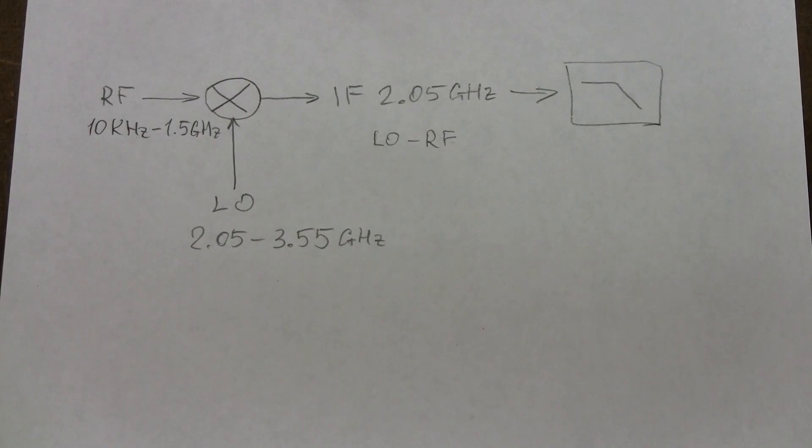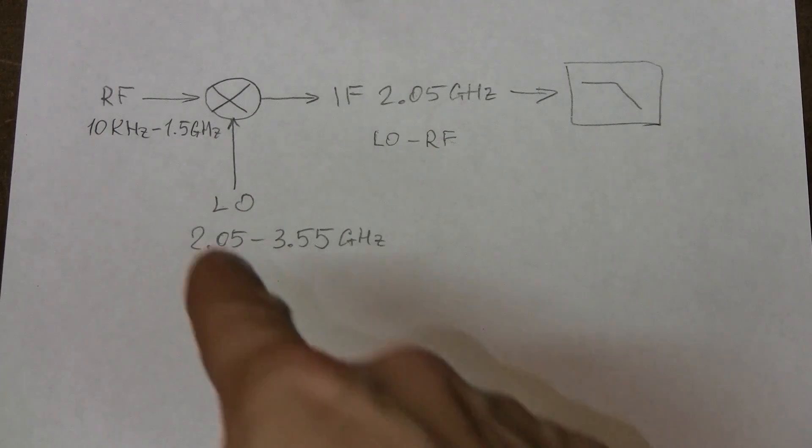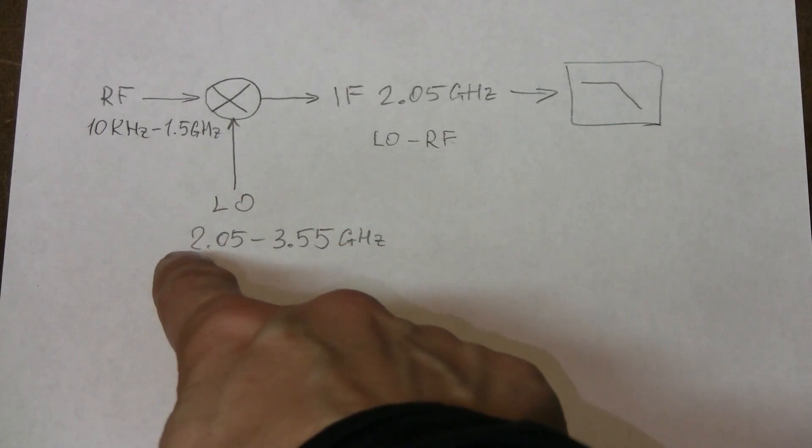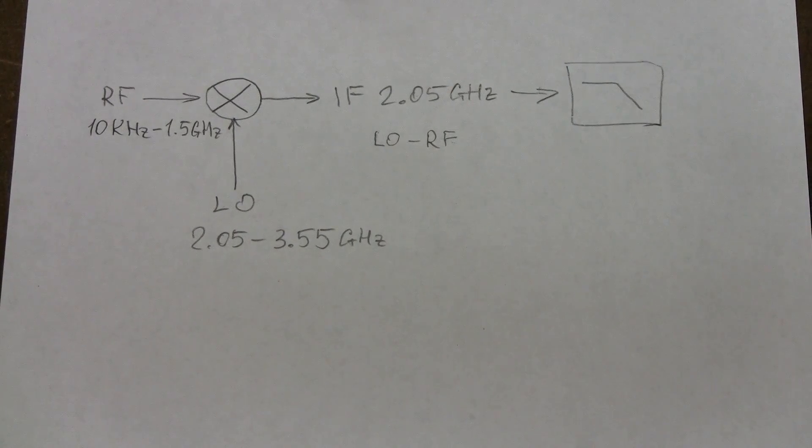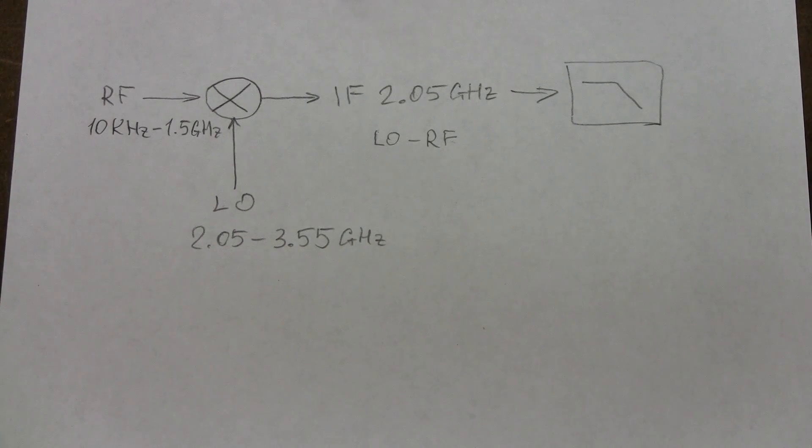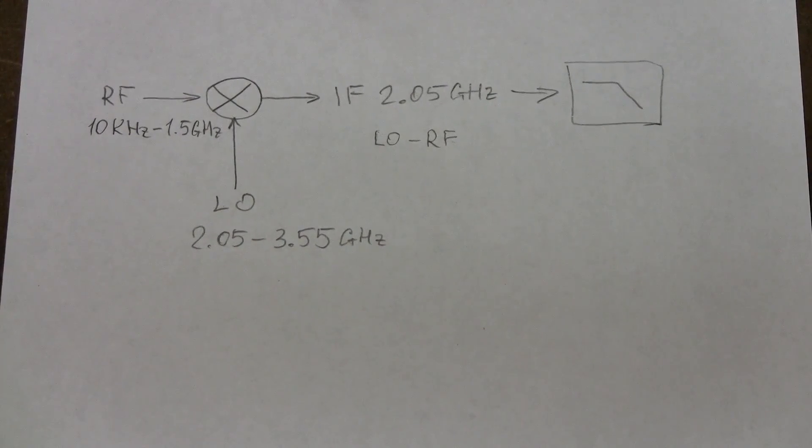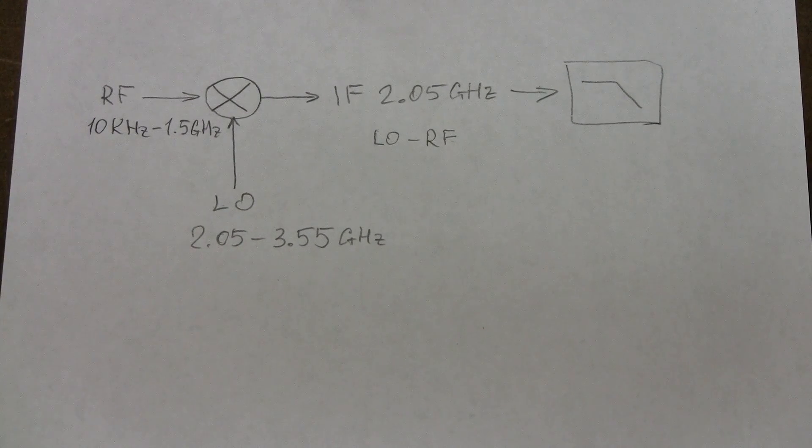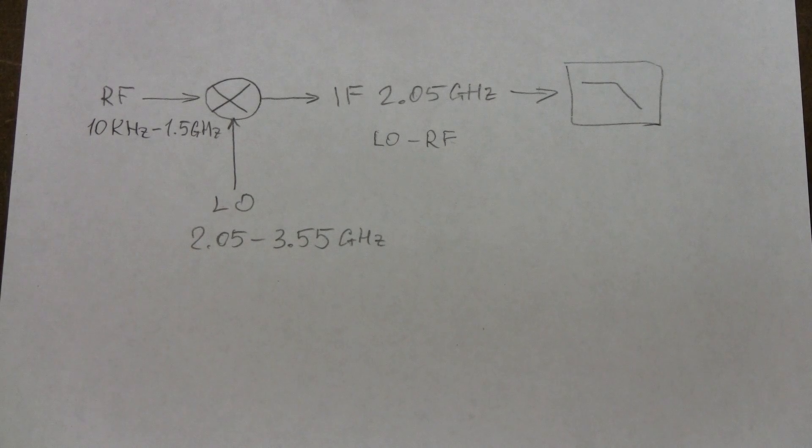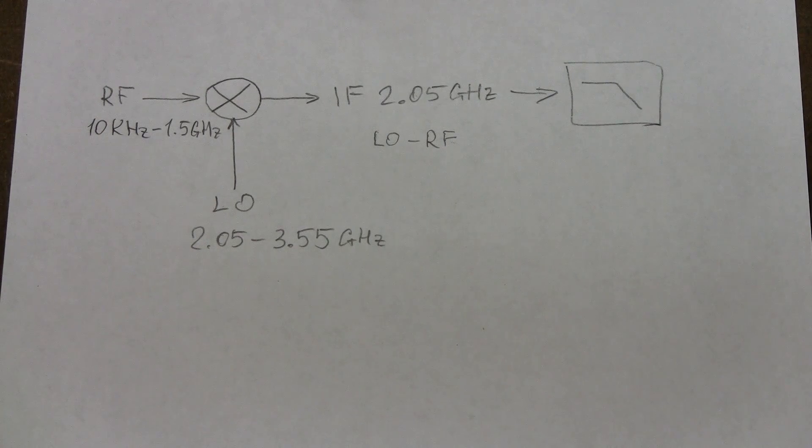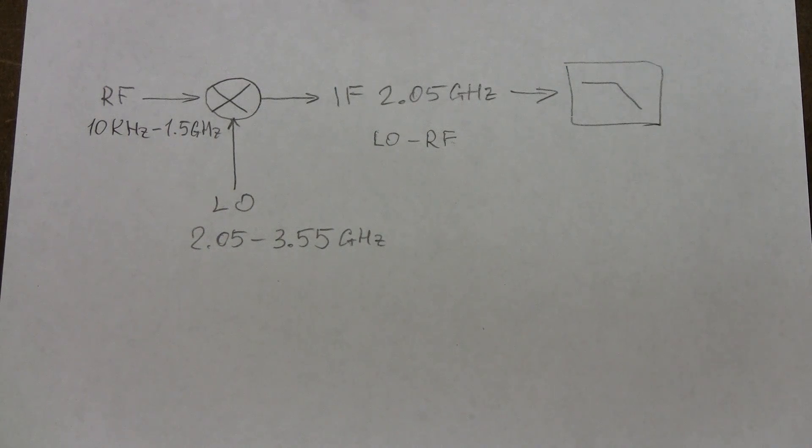This is how the first converter in this analyzer works. The local oscillator can be tuned from 2.05 to 3.55 GHz and this signal is mixed with the input RF signal and the mixer produces all sorts of components. RF plus LO, RF minus LO, LO minus LO, RF plus two LO, LO plus two RF and so on.